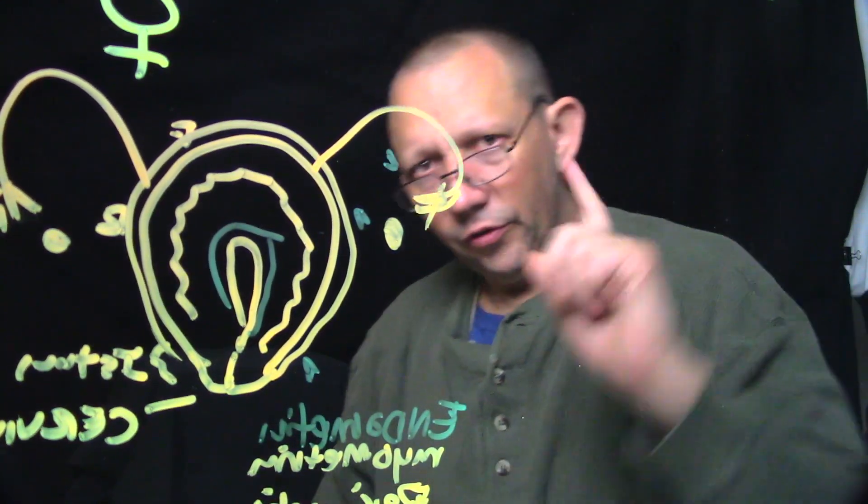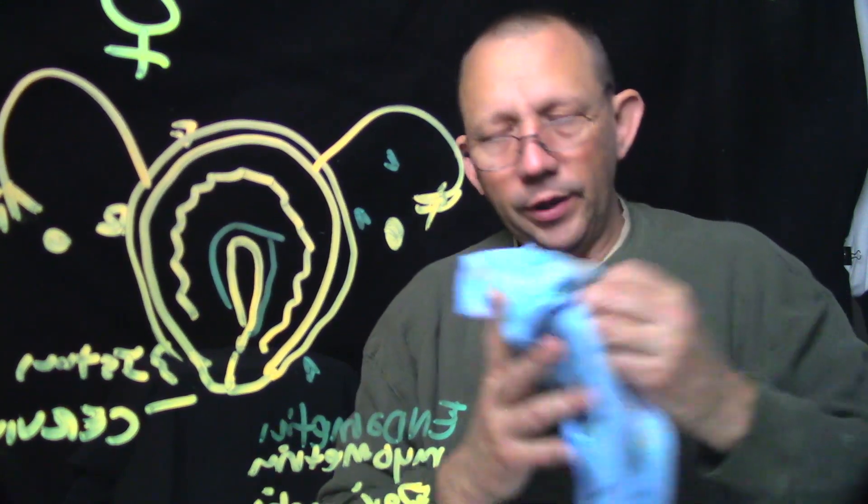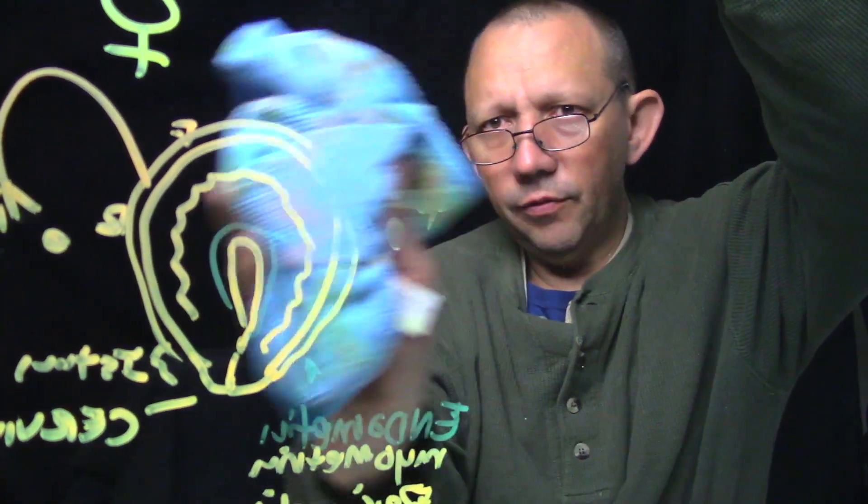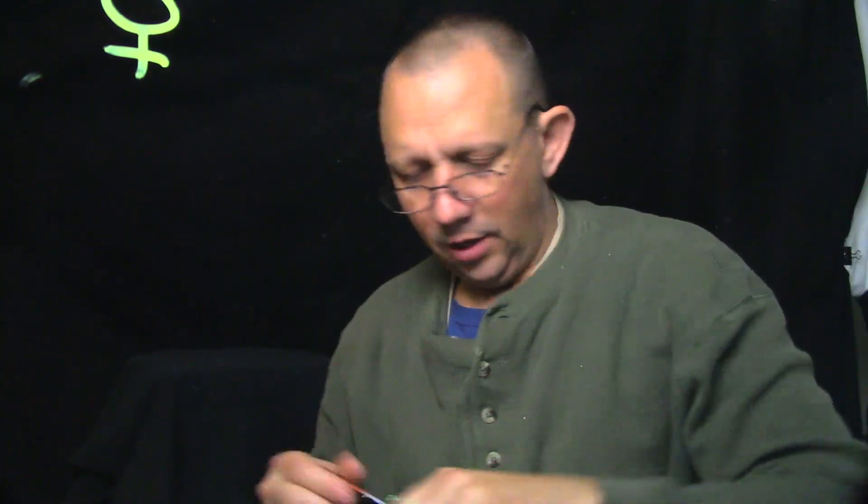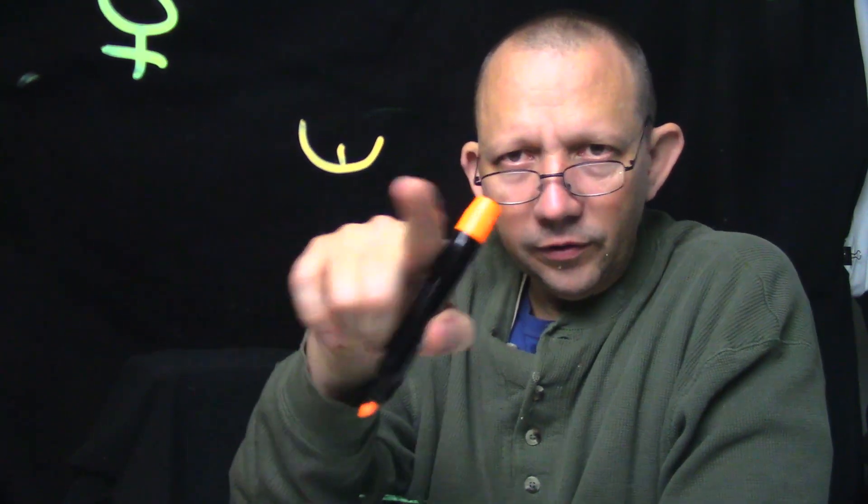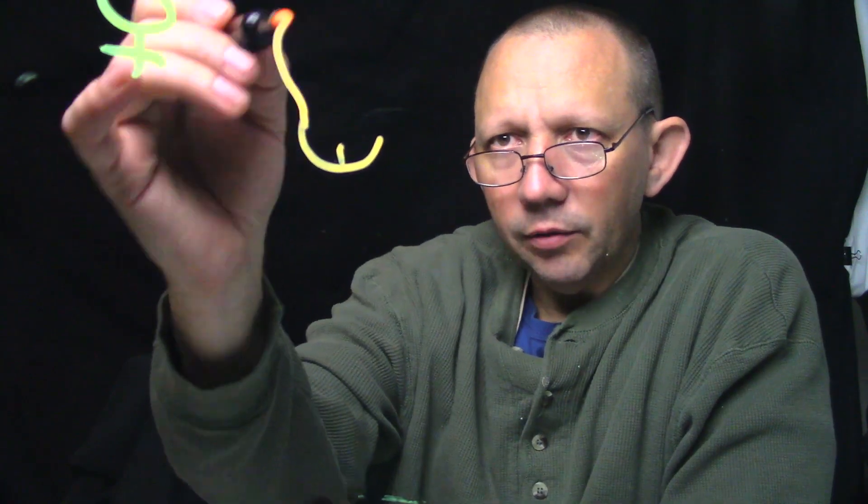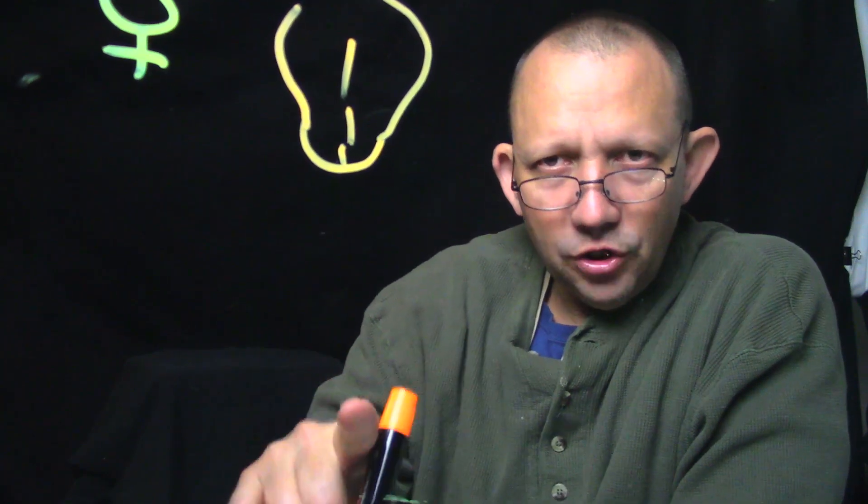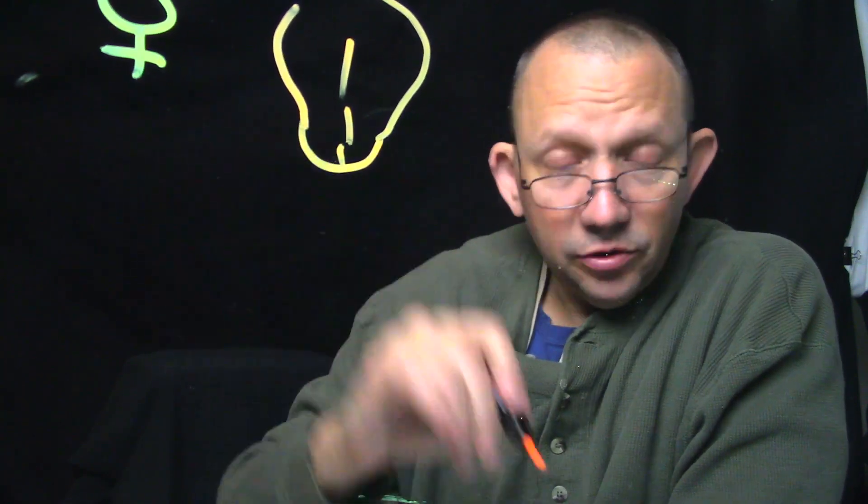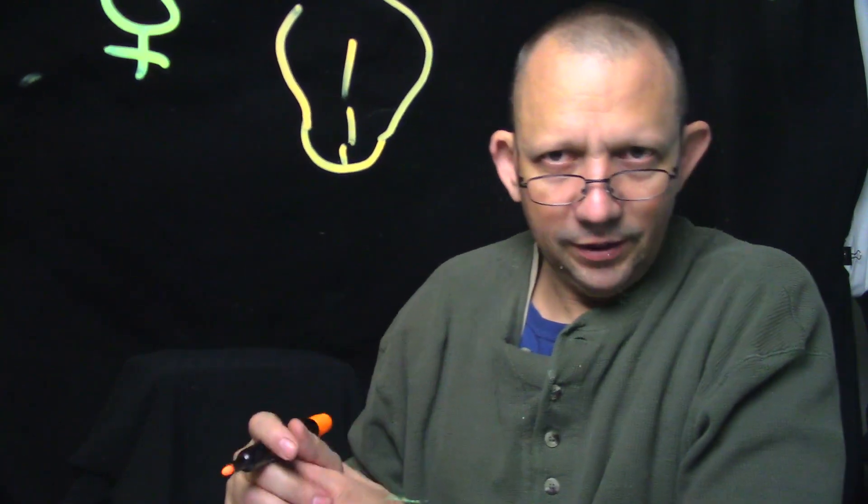Now we're going to go over the accessory organs for the female. The accessory organs are actually the uterus and the fallopian tubes and the cervix and the vaginal canal. From the external os, we have here's the cervix. The cervix is the same kind of tissue as the prostate—they're called homologues and they're very similar.